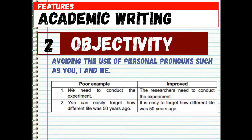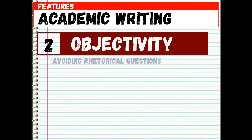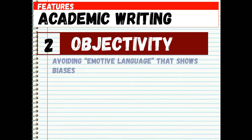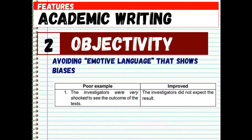Objectivity is also achieved by avoiding rhetorical questions. Instead of writing 'How can these problems be solved?' write 'Certain measures must be discovered to solve problems.' Also, avoid emotive language that shows bias. Instead of saying 'The investigators were very shocked to see the outcome of the tests,' say 'The investigators did not expect the result.'